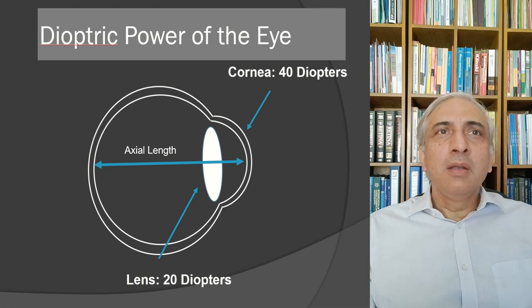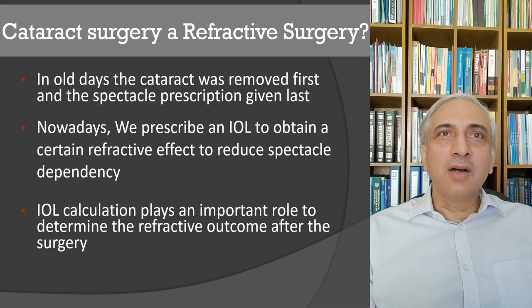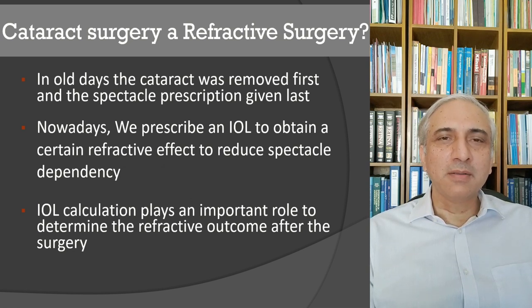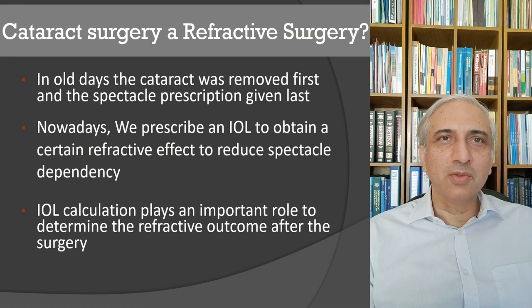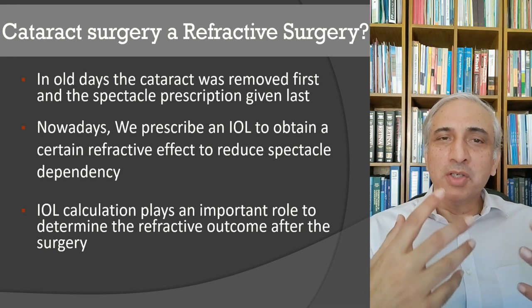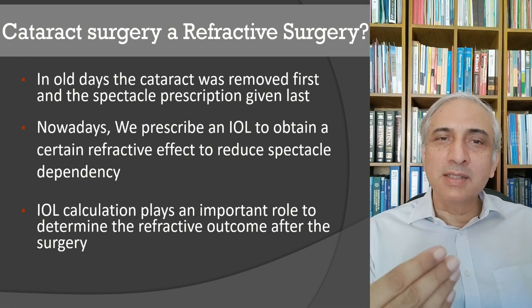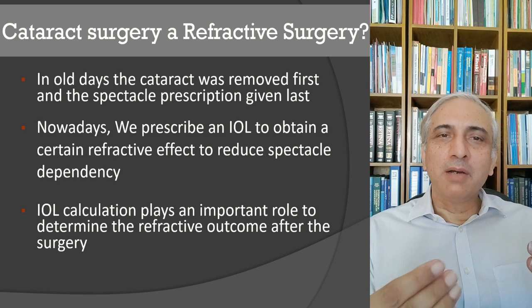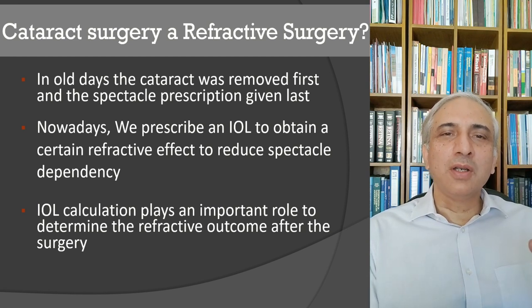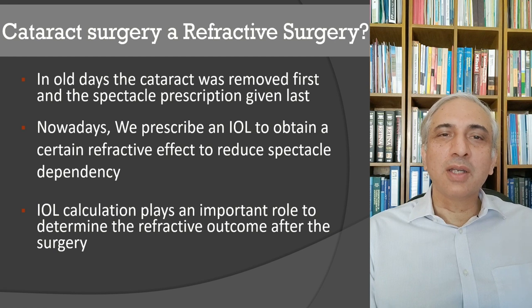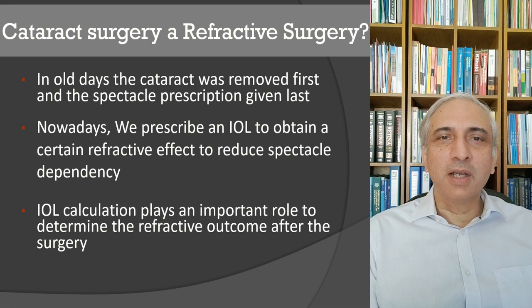In the past, cataracts were removed and spectacles prescribed afterwards. Now we calculate IOL power to achieve emmetropia or a desired refractive outcome. For patients with higher astigmatism, a toric IOL can be implanted to prevent post-operative astigmatism. IOL calculation determines refractive outcomes — we can plan for emmetropia or slight myopia according to the patient's needs.